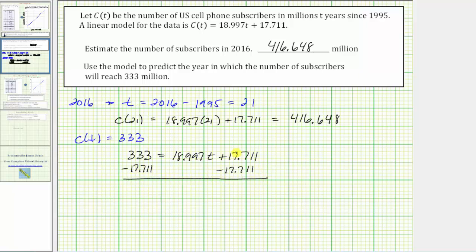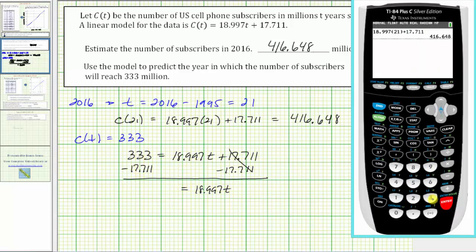Simplifying, this would be zero, so we have 18.997t equals this difference. 333 minus 17.711 is equal to 315.289.